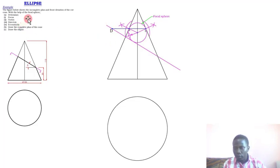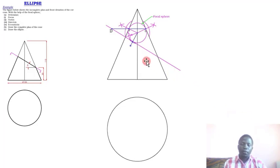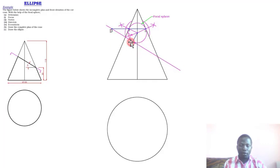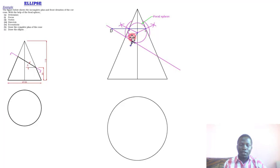We have now obtained the directrix. Next, we determine the focus. We drop a perpendicular from the center to the sectioning line, and the point obtained is what we call the focal point, or the focus of the ellipse.